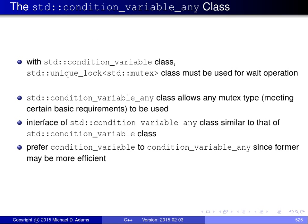With the condition_variable class in the standard library, the wait operation must be provided with a lock of type unique_lock instantiated on the type mutex. But sometimes you might want to use a different mutex type. If you want to do this, you need to use condition_variable_any, which allows any mutex type meeting certain basic requirements to be used. Otherwise the interfaces of condition_variable_any and condition_variable are essentially the same. If you have a choice, condition_variable is preferable because it tends to be more efficient. Only use condition_variable_any if you really need the extra functionality of being able to use an arbitrary mutex type.